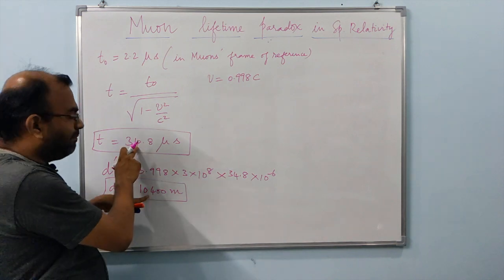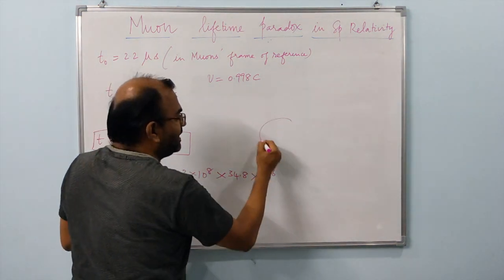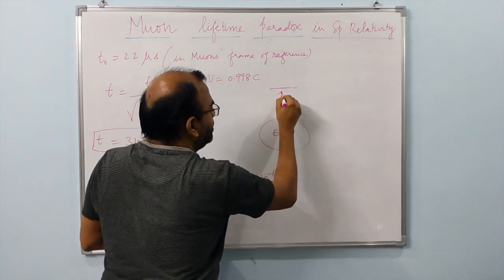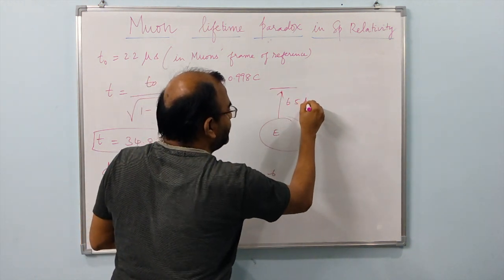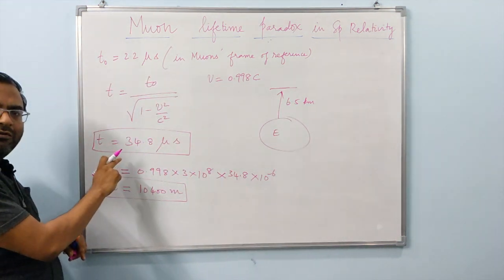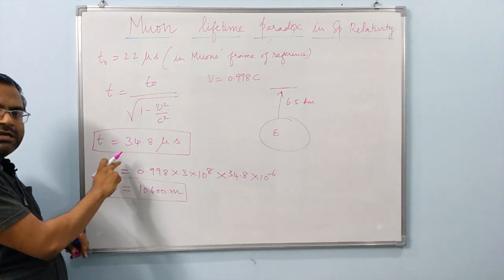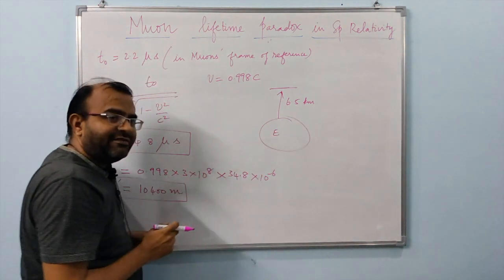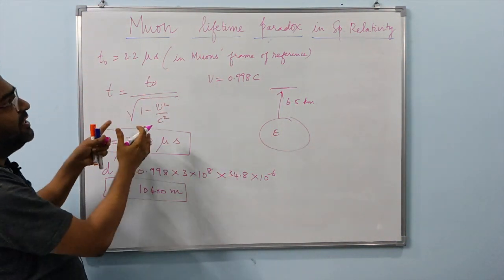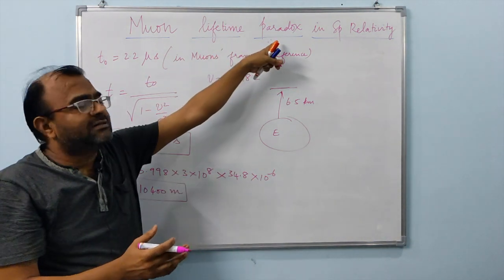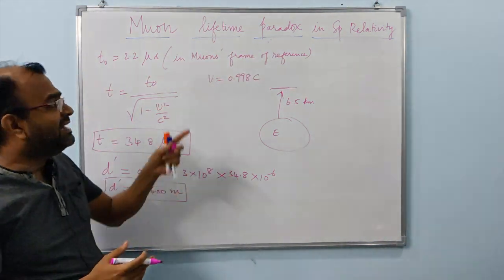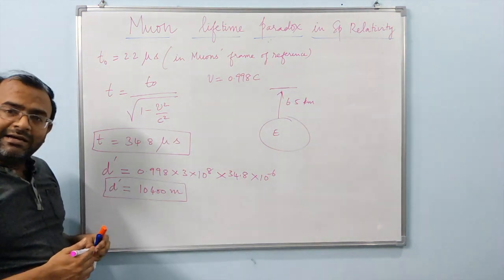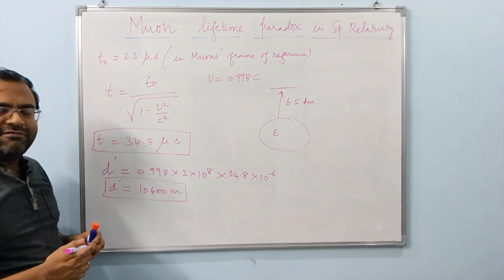Since muons are created at a height of only about six and a half kilometers, the dilated time is more than enough for them to travel to Earth's surface. Using the concept of time dilation, one can easily resolve the muon lifetime paradox.